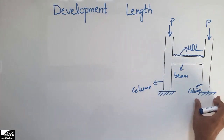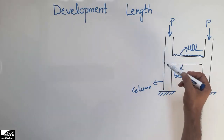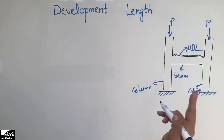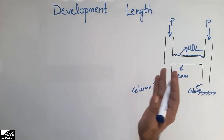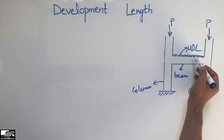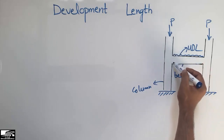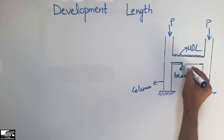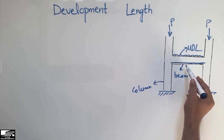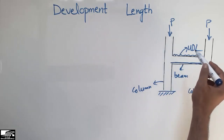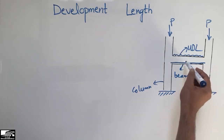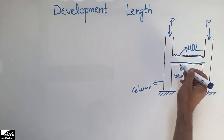The load transfers to the footing at the foundation. The development length is always provided between two different structural members so that it can transfer the load from one member to another. Due to the uniformly distributed load acting on the beam, tension develops at the bottom of the beam. To resist these tensile stresses, tension reinforcement must always be provided at the bottom of the beam.